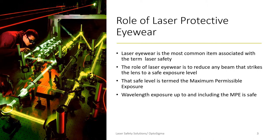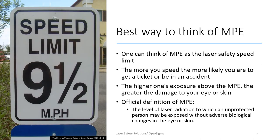Exposure up to and including the MPE value is safe. The best way to think of MPE is as the speed limit — if you're out on the road, the faster you speed, the more likely you are to get a ticket or be in an accident. The higher one's exposure above the MPE, the greater potential for damage to your eyes or skin. The official definition of MPE is the level of laser radiation to which an unprotected person may be exposed without adverse biological changes in the eye or the skin.